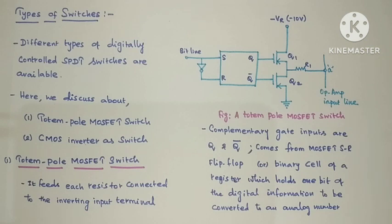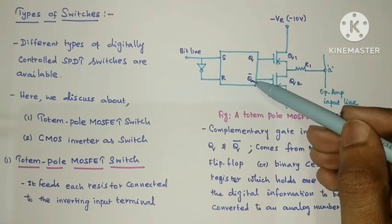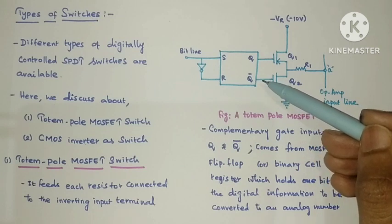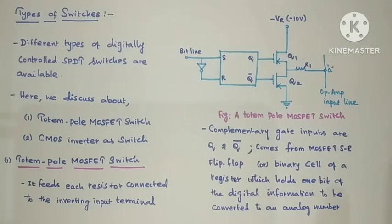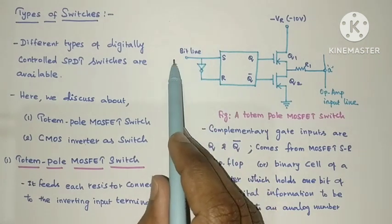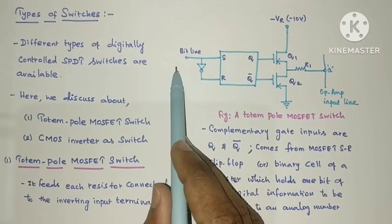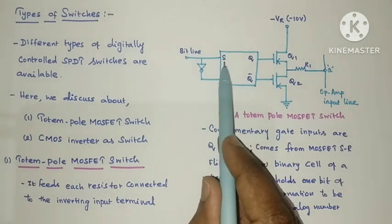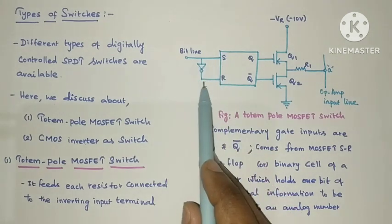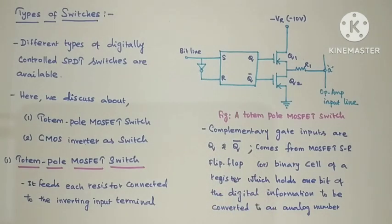Q and Q-bar have values coming from the MOSFET SR flip-flop. This is your bit line — your input bit may be 1 or it may be 0. One connection is directly given to S, and another connection is given to R through a NOT gate. Next we will see the working with the inputs.